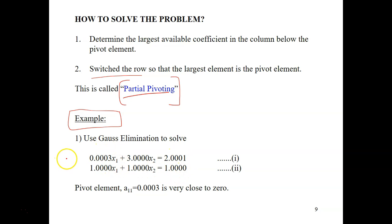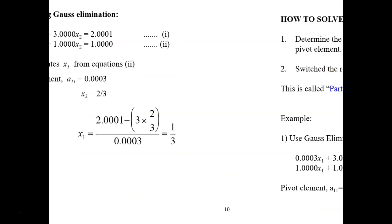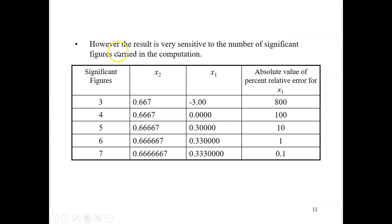For example, consider a linear equation where A11 equals 0.0003. This is the first row and the pivot element A11 is 0.0003, which is very close to zero. Let's solve this without doing anything — just using Gauss elimination — and see what happens.